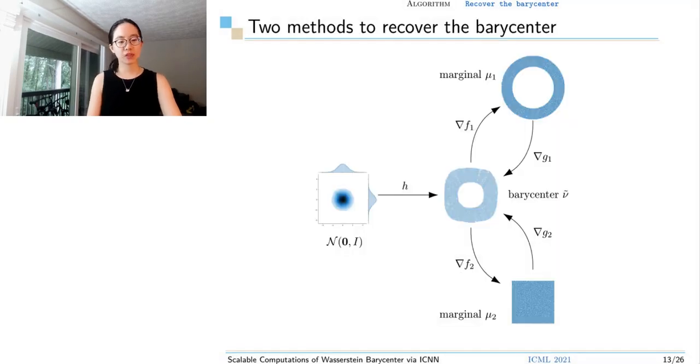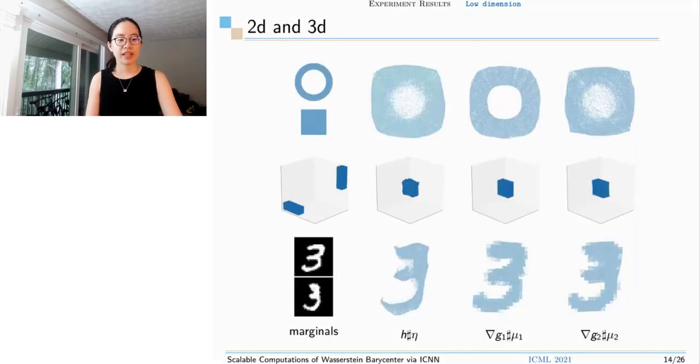Then, a natural question is how to recover the barycenter. In other words, how to sample from it. In fact, there are two ways to sample from it. One is through the generator h. Another is through gradient of g_i, because it's the optimal Monge map from marginal distributions to the barycenter. However, gradient of g_i couldn't give infinite number of samples if the samples from marginal distribution are limited.